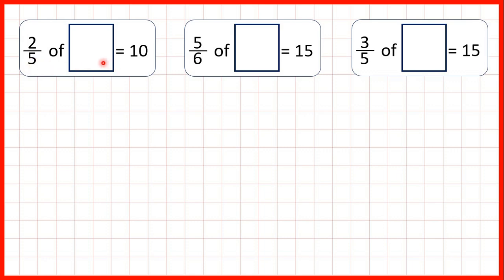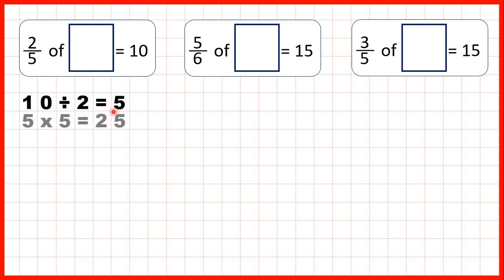So, two-fifths of what equals 10? We can do 10 divided by 2 — divide by the numerator — to get 5. Then we take that 5 and multiply by the denominator to get 25 as our total quantity. That makes sense because 25 divided by 5 is 5, and then 5 times 2 is equal to 10.